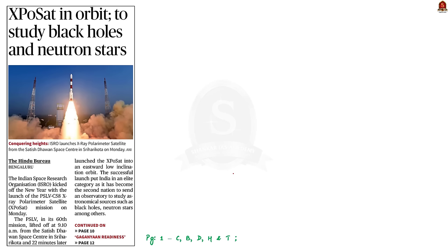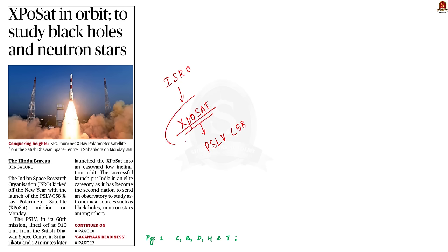Look at this news article. ISRO has successfully launched the X-ray Polarimeter Satellite, XPoSat, into space. This satellite was carried by the PSLV-C58 launch vehicle. The aim of the satellite is to study astronomical objects like black holes and neutron stars. India is the second country to study these objects with the help of a satellite, after the USA. In our analysis, let us understand about the X-ray Polarimeter Satellite.